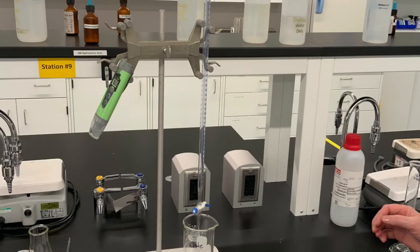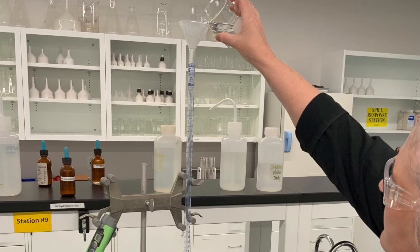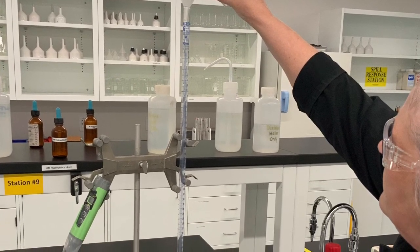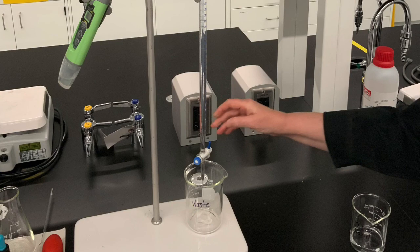First step is to condition the burette with the sodium hydroxide solution. The fastest way to do that is to fill the burette all the way up with the sodium hydroxide solution and then release the whole volume, one burette full, into a waste beaker.